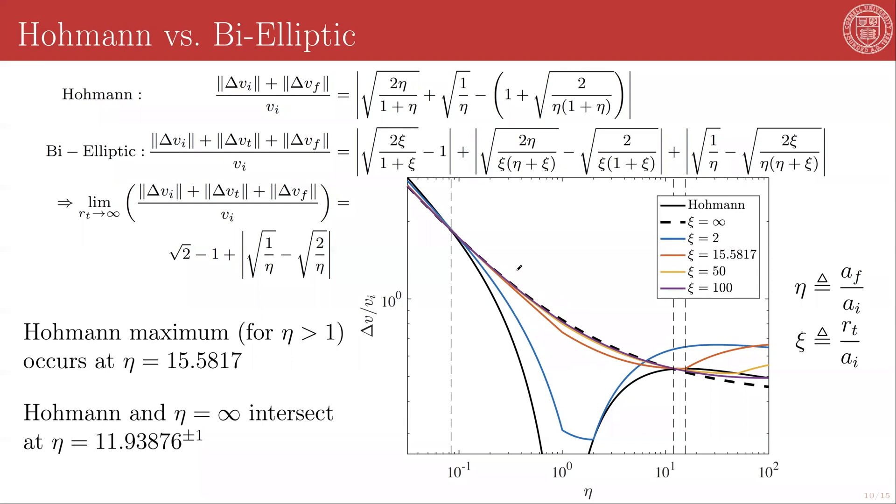Outside of this range, if you're going inwards, the bi-elliptic transfer is going to be more efficient. On the other side, when you're going outwards, you have this interesting effect where these xi curves bounce off of the Hohmann curve at values of eta equal to xi. So for example, this xi equals 2 curve, shown here, bounces off of the Hohmann transfer curve at exactly an eta of 2, but this occurs in this 11.9 and 1 over 11.9 range, so this curve will never be more efficient than the Hohmann curve. On the other hand, this xi equals 50 curve over here only goes above the Hohmann curve at an eta of 50. And so in this range, for eta is between this 11.93 number and 50, a xi of 50 bi-elliptic transfer will be more efficient, and so on and so forth.